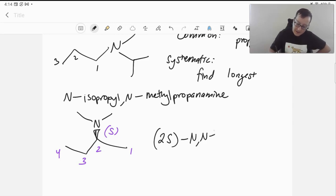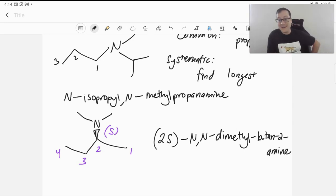And so, this will be 2S, N, N, because we have two methyl groups on the nitrogen. Dimethyl, 1, 2, 3, butan-2-amine. So, again, there, we're going to need that locator number for where the amine is. Like, we would have butan-2-ol, for example, if we had an alcohol there instead. And we do need to indicate the stereochemistry.